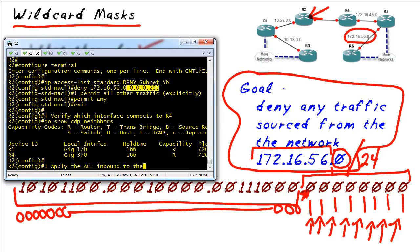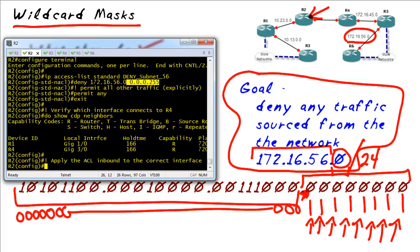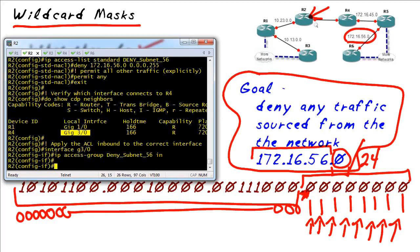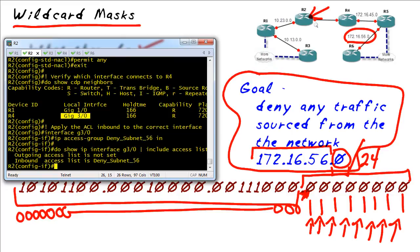So I also want to apply this to the correct interface. So show CDP neighbors shows me that my Gig 3.0 interface is the one that's connected right here, over to R4, and we'll apply the access list we created inbound on that interface, and then just verify that it really did get applied.